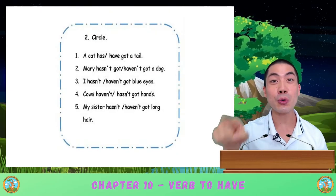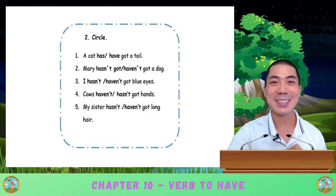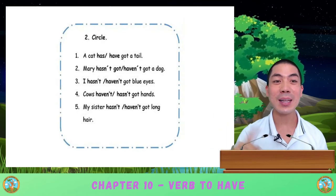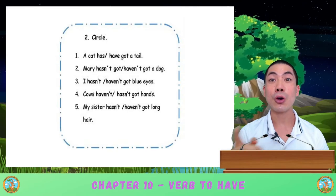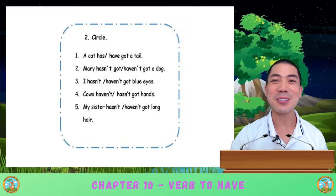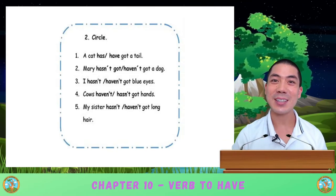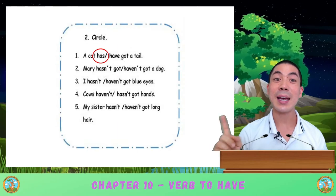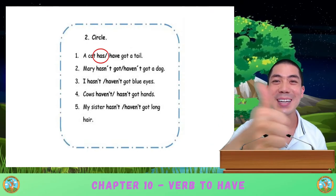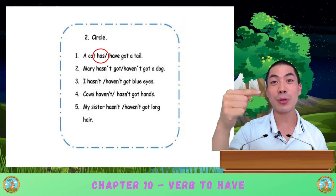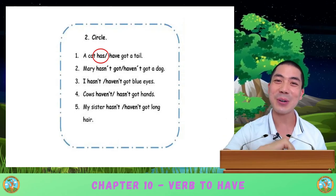In part two, we must circle the correct answer to make the sentence right. Question one: 'A cat has or have got a tail?' Good — this one is 'A cat has got a tail.' Take some time to read all the sentences and circle the correct answer.